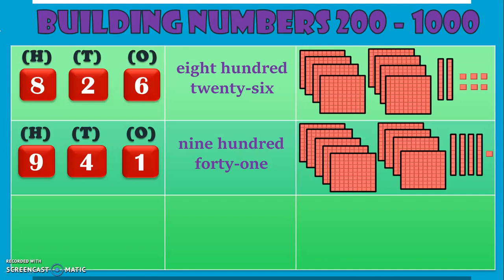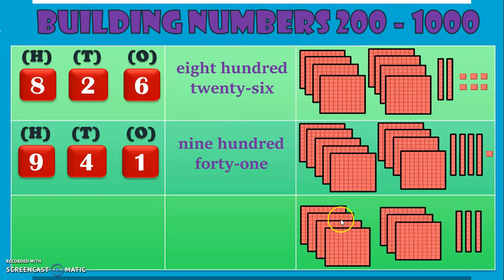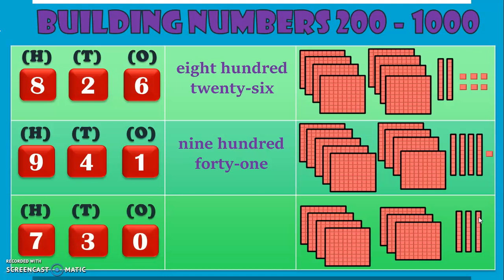Let us move on to the next number. What number does this make? 1, 2, 3, 4, 5, 6, 7 — we have 7 hundreds. And how many 10s? 1, 2, 3 — 3 tens. And we don't have any number in the 1s place. So it makes a number with 7 in the 100s place, 3 in the 10s place, and 0 in the 1s place — 730.